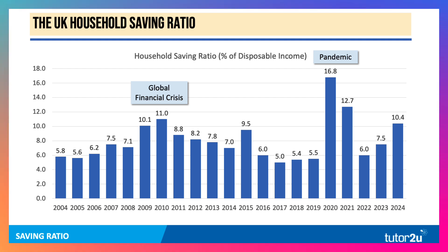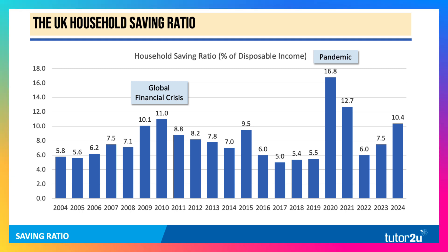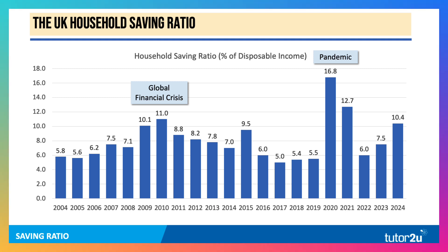The ratio has obviously fallen back as the economy recovered from the pandemic. But notice that in 2024, there was a big jump in the savings ratio from 7.5% in 2023 to 10.4% in 2024. In part, this is the consequence of people's worries about economic growth, about jobs, and also about inflation.